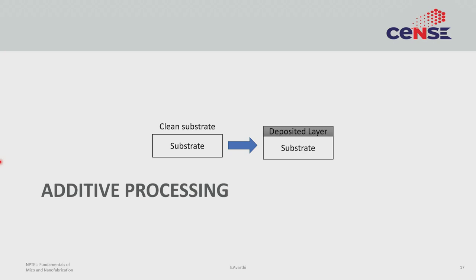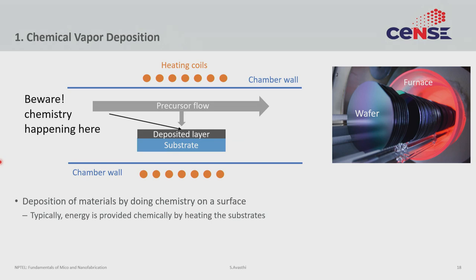Now let us move to some additive processing examples. The easiest way to do additive processing is chemistry. You take some substrate and flow what we call a precursor — a chemical that at a given temperature would react either with itself or with some other chemical to form the material you want to deposit. If you flow that precursor inside a furnace, the furnace heats the substrate to the right temperature, and when the precursor sees that temperature it reacts and forms the deposited layer. This is done inside a container called a chamber. This is what is typically called chemical vapor deposition, or CVD. We are doing chemistry in the vapor phase — these precursors are typically gases or vapors of liquids.